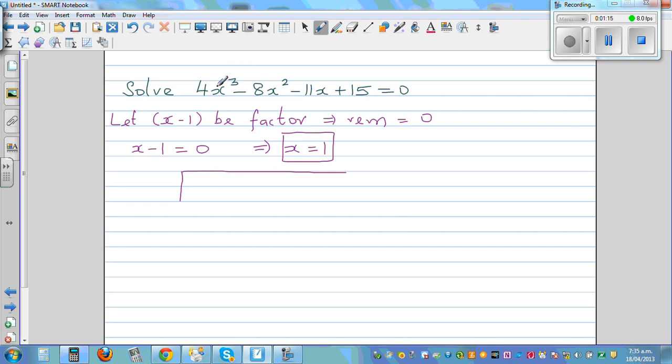So first write the coefficients of the cubic polynomial, which is 4, negative 8, negative 11, and 15. You've got all the coefficients: coefficient of x cubed, x squared, x, and the constant.